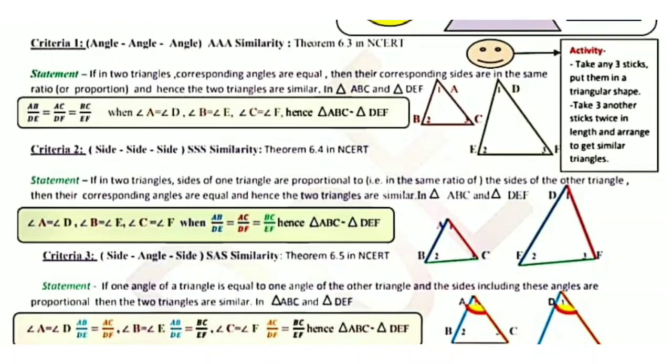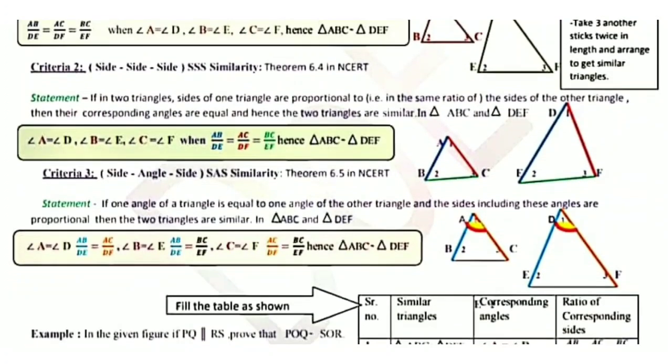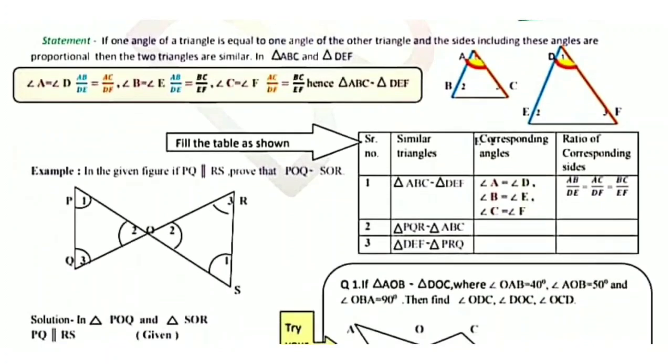Activity: Take any three sticks, put them in a triangular shape. Then take three more sticks with twice the length and arrange them to get similar triangles. The first three sticks form one triangle; the second set with double length forms another triangle. The ratio of their lengths will be one by two, one by two, one by two. So the two triangles formed in this activity will be similar — they will look the same to you.